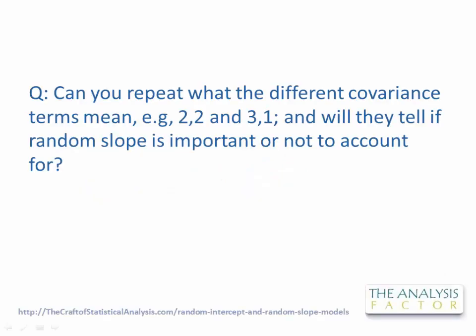Okter asks: can you repeat what the different covariance terms mean, for example 2 comma 2 and 3 comma 1, and will they tell if the random slope is important or not to account for?